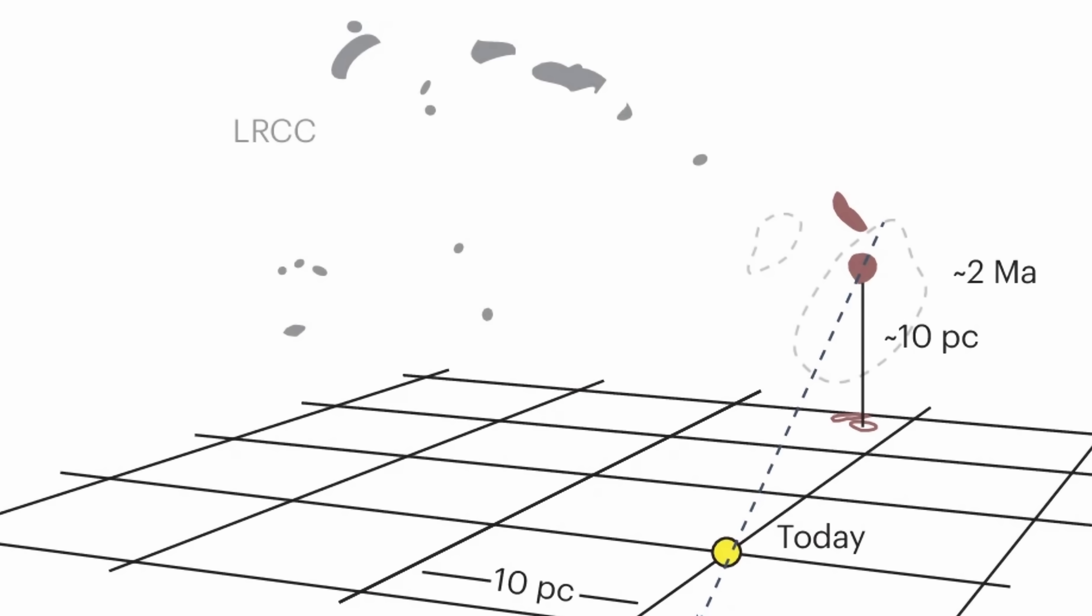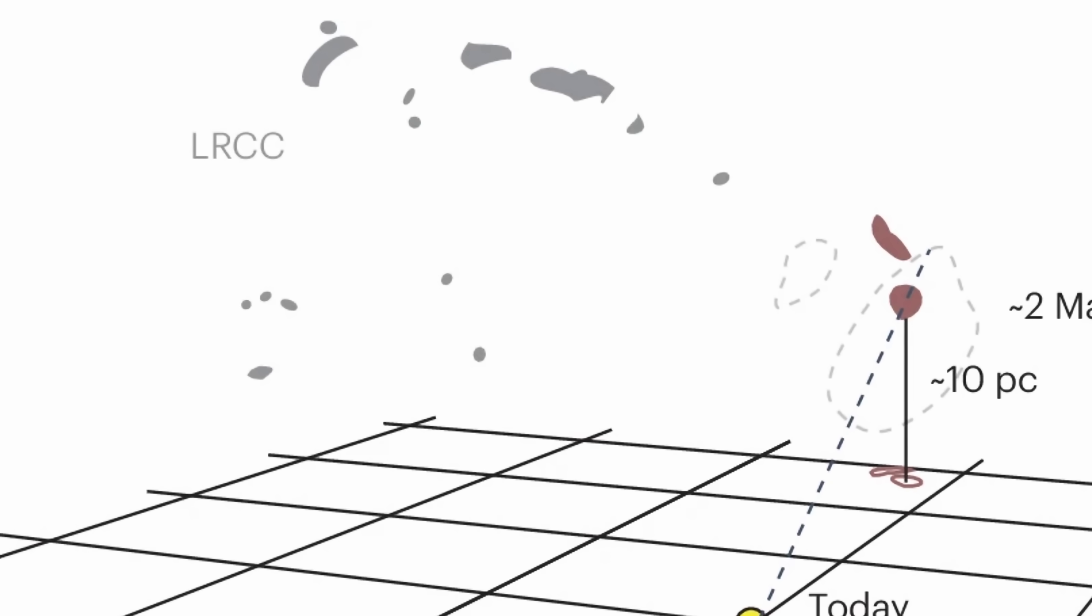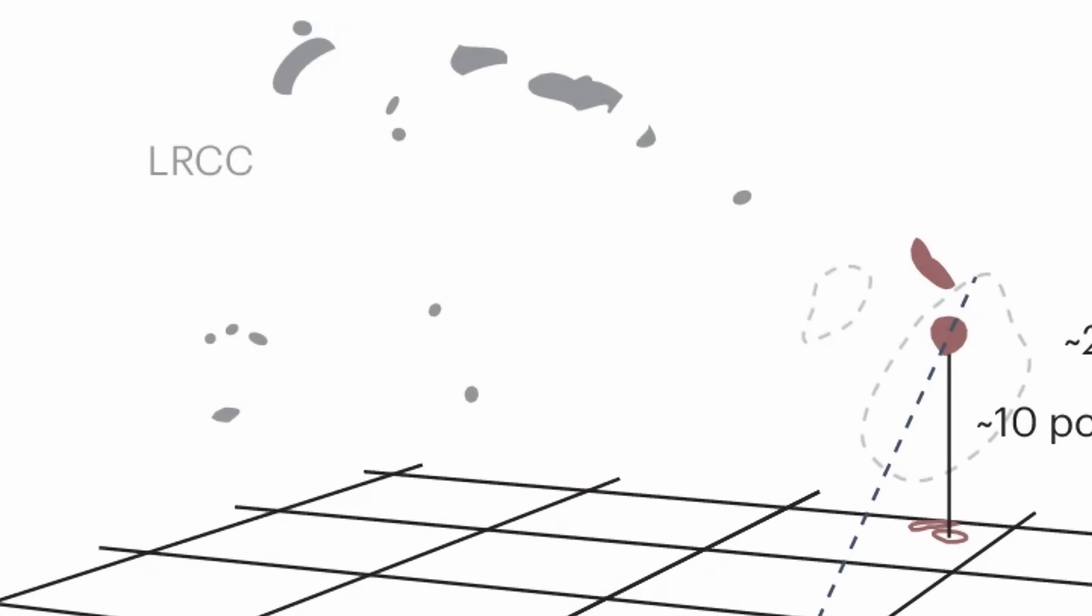Even today we still have no idea why the ice ages began so suddenly approximately 3 million years ago and why they're still going on even today. As a matter of fact, we're technically now in the interglacial period and chances are another ice age is going to start in the next 30,000 years. But because we're pretty far away from this cloud, it would be difficult to explain why the ice ages never stopped.